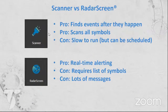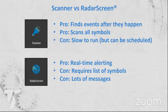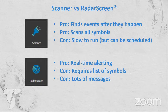Scanner and Radar Screen are complementary tools. Scanner is good because it finds events after they happen across the whole universe of symbols, but it can be slow to run. Radar Screen does real-time alerting but requires you to provide your own list of symbols. A drawback with Radar Screen alerts is it can throw off a huge number of alerts if you set it to alert continuously — potentially thousands — so you want to be careful.